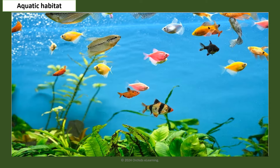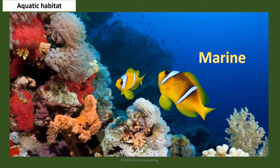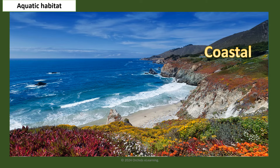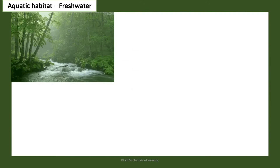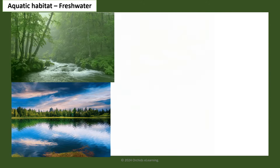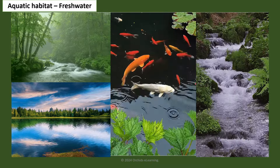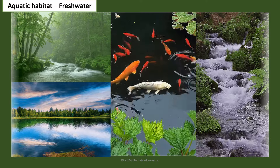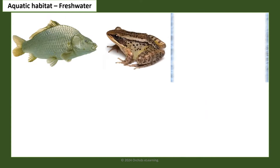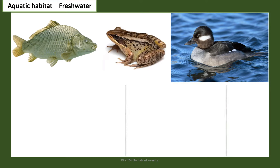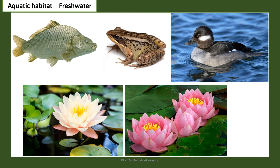The aquatic habitat comprises all the water bodies on the planet and is mainly of three kinds: freshwater, marine, and coastal. Rivers, lakes, ponds, and streams are examples of freshwater habitats. Fish, frog, duck, lotus, and water lily are found in freshwater.